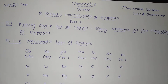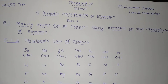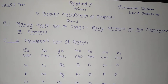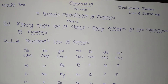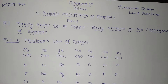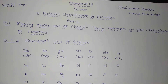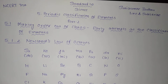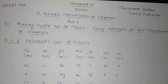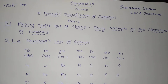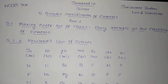In Part 1, we learned 5.1 Making Order Out of Chaos — Early Attempts at the Classification of Elements — in which we learned about Dobereiner's Classification of Elements, that is Dobereiner's Triads. That classification had only 3 groups, and it had limitations, so this system was not found to be useful. The next scientist who tried was Newland.